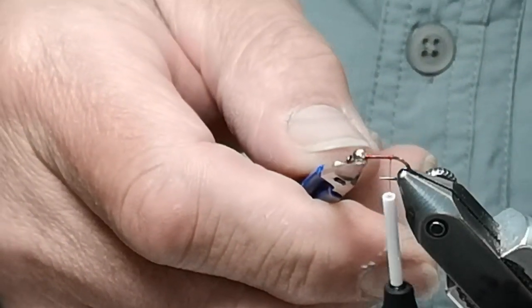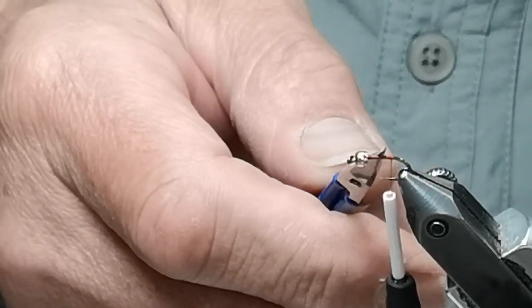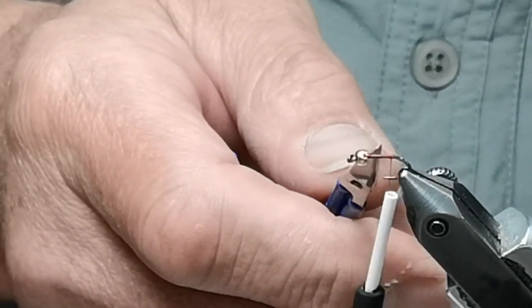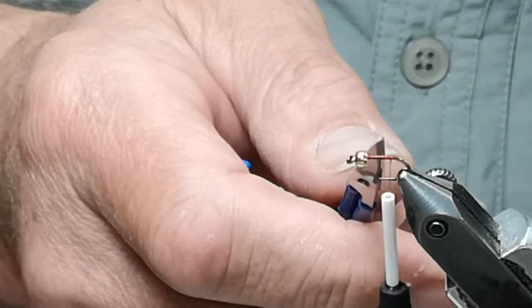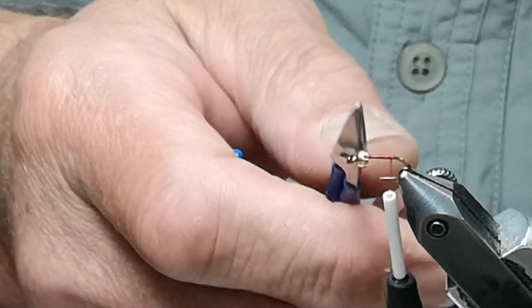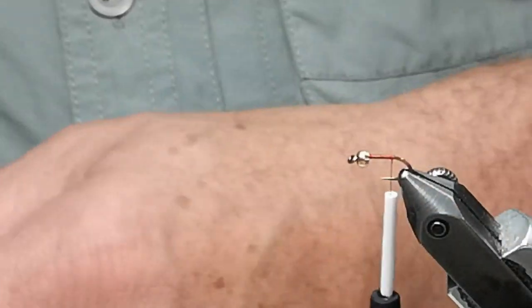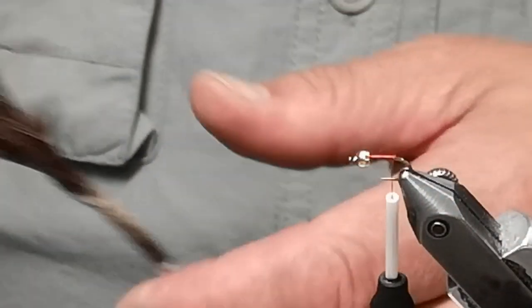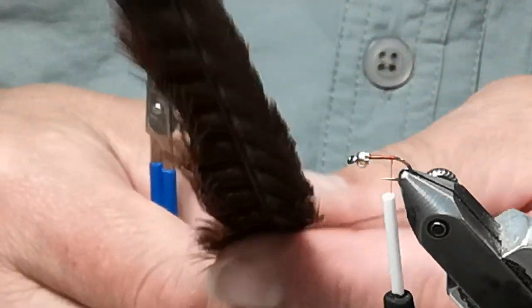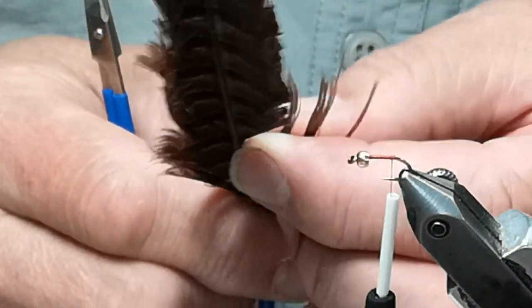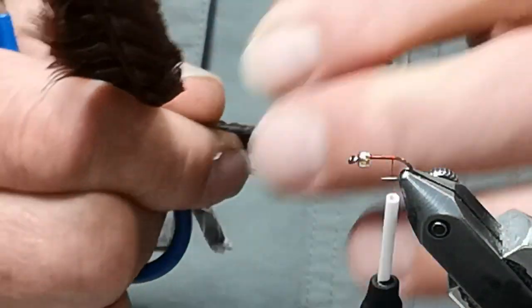For materials, on a little 14 or 16 hook I'll put on either a 3/32 gold bead or a 7/64 gold bead. Pheasant tail is going to be the body, and on this short one you don't need a lot.